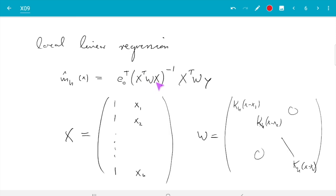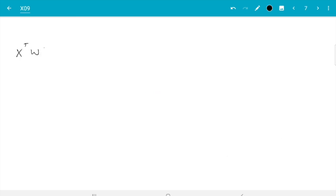So x transpose w x is, well x transpose is ones in the first row and x1 up to xn in the second row. And you see that has simplified now a bit by me not subtracting the x. Then w is kh x1 minus x. I have swapped the order here, but that does not matter up to kh xn minus x. It does not matter because kh is symmetric. So kh of minus x equals kh of plus x. And then here we have an x. So it is just column of ones and then x1 up to xn.